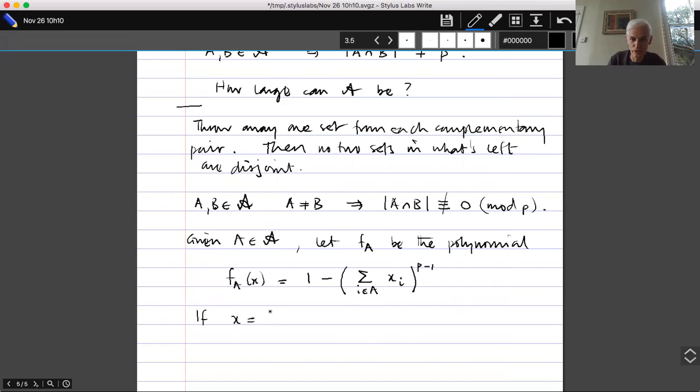So here if the size, if this number here is not zero mod p, then by Fermat's little theorem when I raise to the power p minus one I'll get a one, and then the one minus that will give me zero. And if on the other hand this is zero mod p, then I'll get zero here and so the thing will be one. So now let's just observe that if x equals the characteristic function of b for some b in curly A, then f_a of x equals one if a equals b.